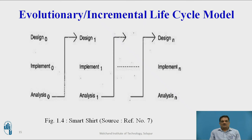The incremental model begins with outline requirements that are not in detail, and then implementation, design, and analysis are done on the first increment, called the initial version. Once the initial version is done, it is exposed to user experience. Users working with the initial version give feedback, which is considered as a requirement for the next version. Design and implementation are carried out again, and the next increment is exposed to users. This continues until the last increment satisfies all the needs of the customer, at which point it is considered the final project.